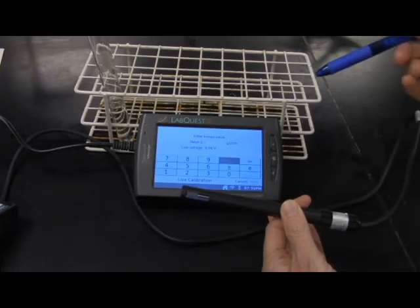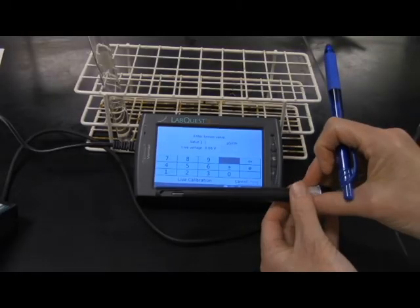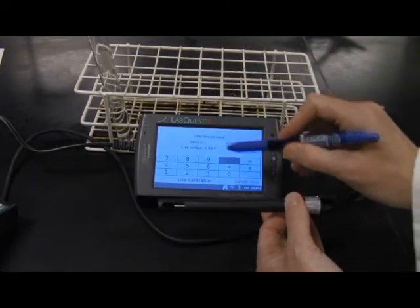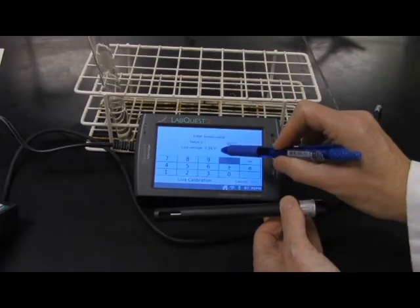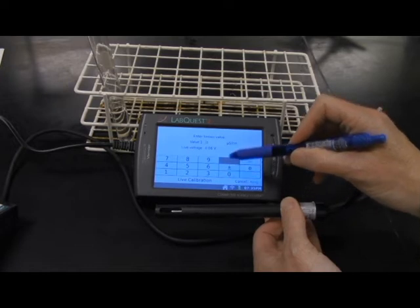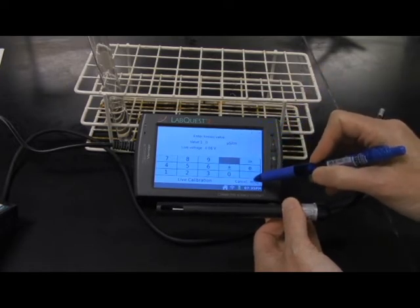We're doing a two point calibration where we're going to say when the probe is in air, it should have zero conductivity, which makes sense. And notice the voltage reading here, 0.06. We're going to enter a zero for our conductivity range and click keep.